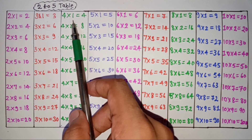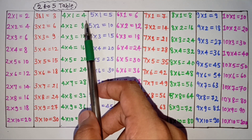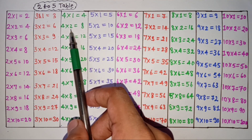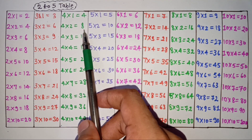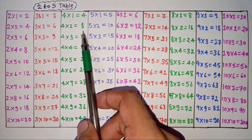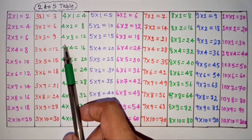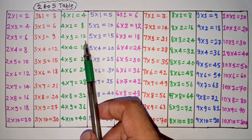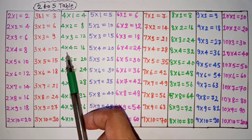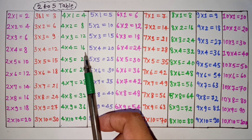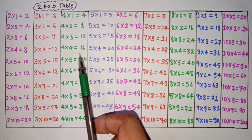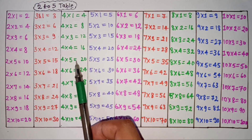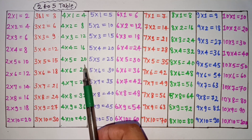4 1's are 4, 4 2's are 8, 4 3's are 12, 4 4's are 16, 4 5's are 20.